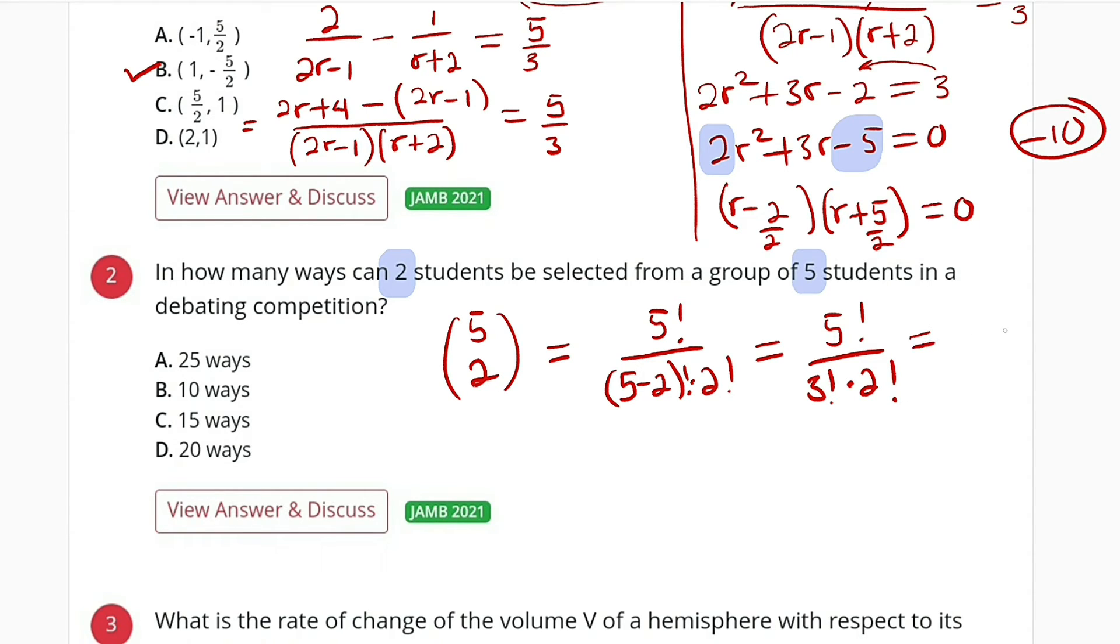This is 5 × 4 × 3 × 2 × 1 divided by 3 × 2 × 1, then 2 × 1. For cancellation, we can see from 3 down to 1 will cancel.